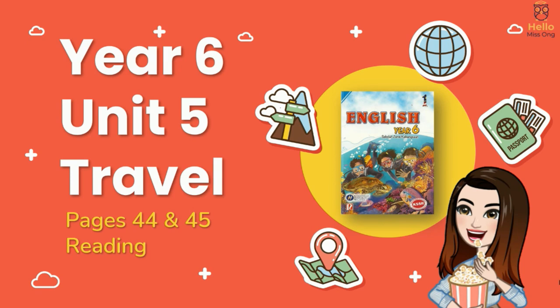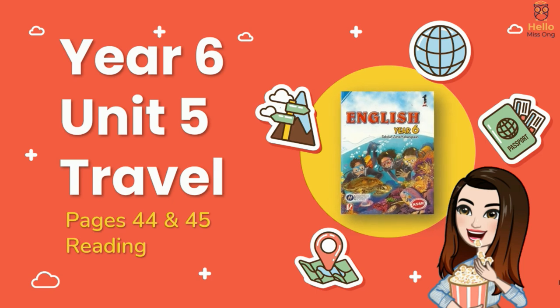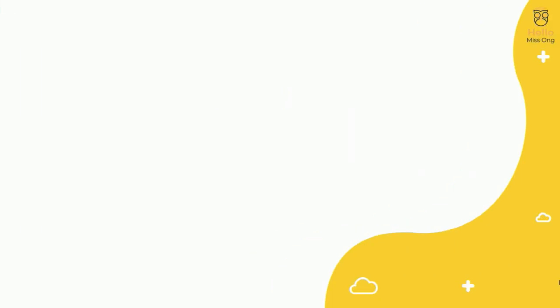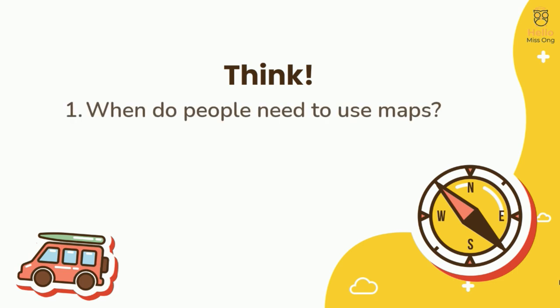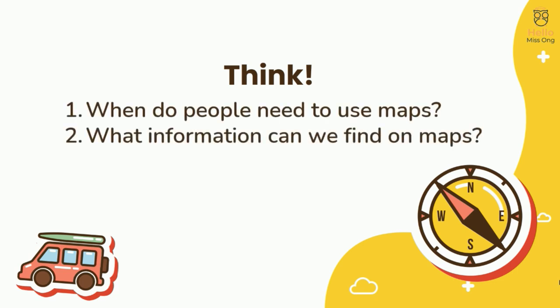Unit 5 Travel, pages 44 and 45 — reading skills. Get ready with your textbook, we're going to start now. First, think: when do people need to use maps? What information can we find on maps? We use maps when we want to know the location of a place or an object.